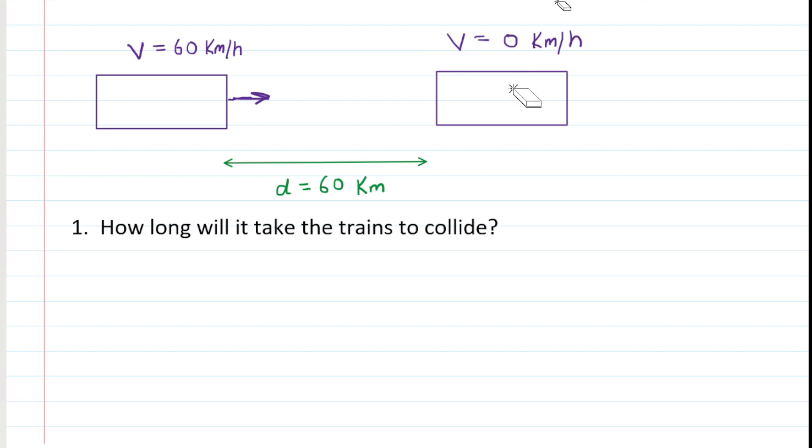So now we have the train on the right stationary, and the one on the left is heading towards it at 60 kilometers per hour. And you can now ask yourself, if that's the case, and they're separated by a distance of 60 kilometers, how long is it going to take for this train on the left to smack into the stationary train on the right?